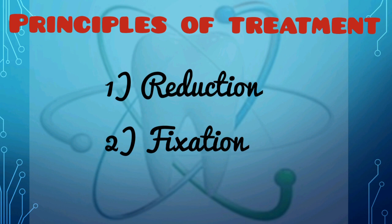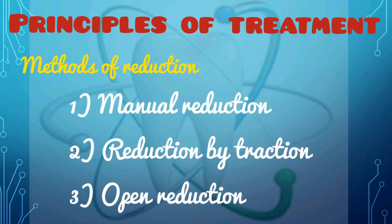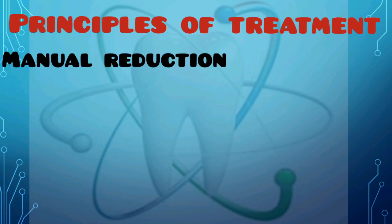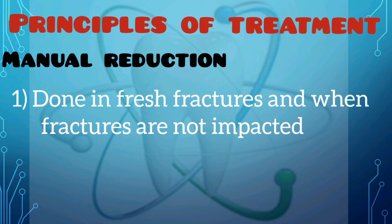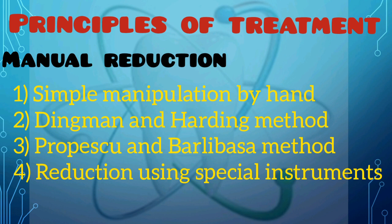Coming to the principles of treatment for mid-facial fractures: the principles consist of reduction and fixation of the fractured bones to one another and to the skull. The reduction methods can be of three types: manual reduction, reduction by traction, and open reduction. Manual reduction can be carried out in all fresh fractures where the fragments are not impacted, using various methods including simple manipulation by hand, the Dingman and Harding method, the Propescue and Berne-Busser method, and reduction by using special instruments.